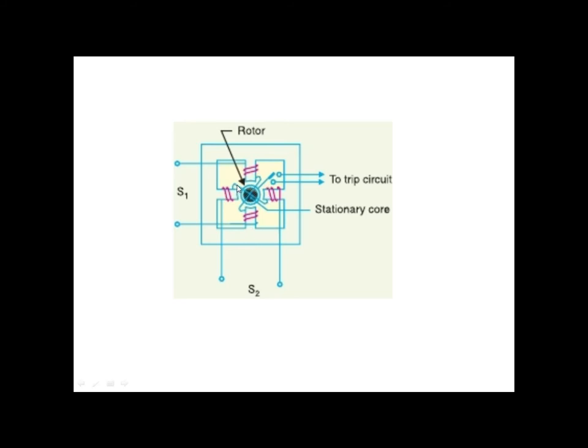To prevent continuous rotation, a spring and a backstop carried on an arm attached to the spindle of the cup are used to stop the continuous rotation.